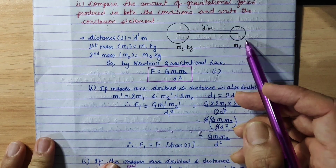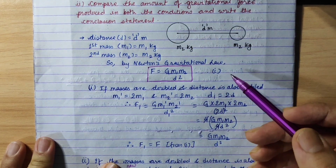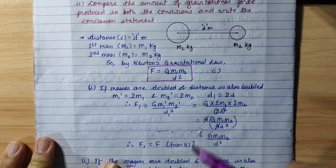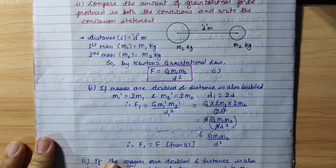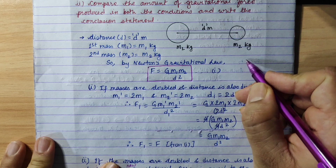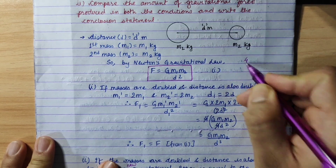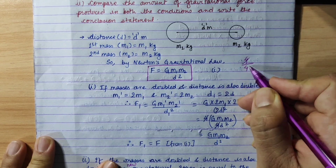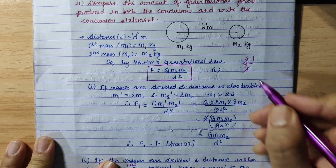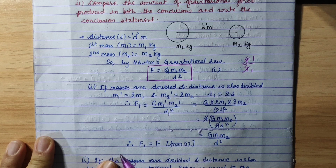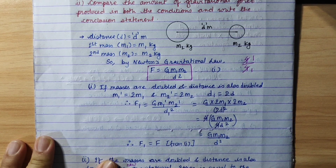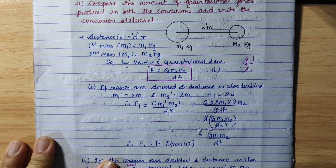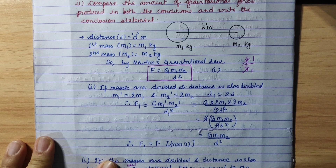When the mass is doubled, the numerator becomes 4 times. When the distance is doubled, the denominator also becomes 4 times. Ultimately, the new gravitational force equals the original gravitational force. Thank you — see the next video in the comment box.